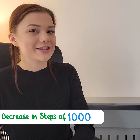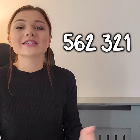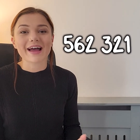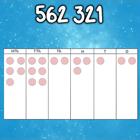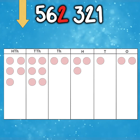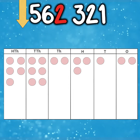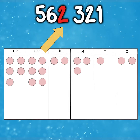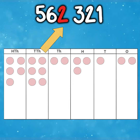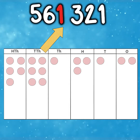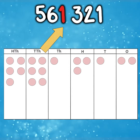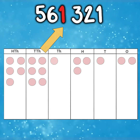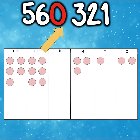Now let's try counting backwards in steps of 1000. I have a new number, which is 562,321. We are going to decrease our number by 1000, which is the same as counting back in steps of 1000. We do the exact same thing as the last example; however, because we're counting backwards, we're going to decrease the digit in the thousands column. The digit in the thousands column is 2. One less than 2 is 1, so my new number is 561,321. Continuing to decrease by 1000: the thousands digit is 1, and 1 less than 1 is 0, so we now have 560,321.